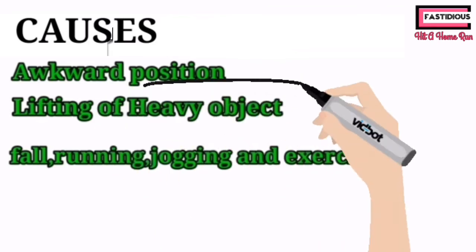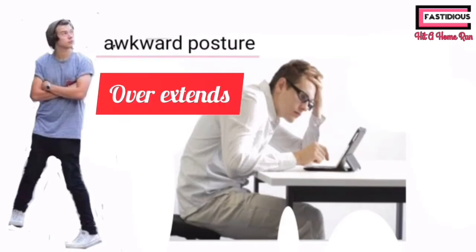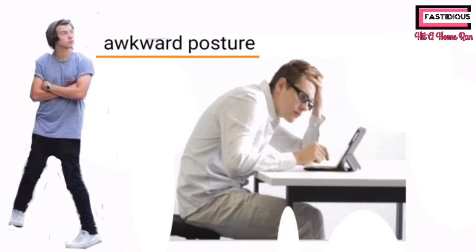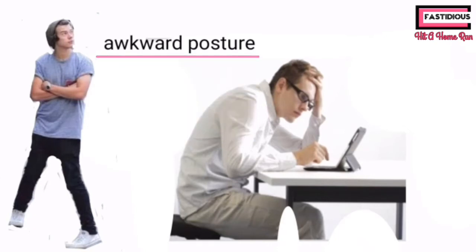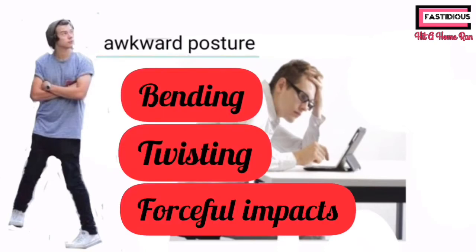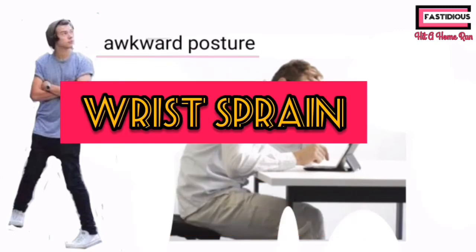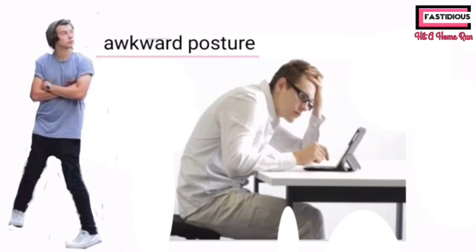The first cause is awkward position, which means poor posture. Sitting or standing in a poor position overextends the ligament, and this overextension tears the ligament leading to sprain. For example, bending, twisting, or forceful impacts on the wrist will cause wrist sprain. This wrist sprain can also proceed to carpal tunnel syndrome by compressing the median nerve in the carpal tunnel.